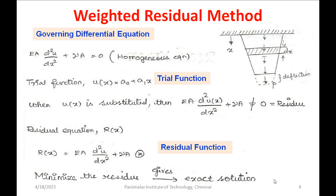When u(x) = a₀ + a₁x, we do not know the values of a₀ and a₁ because it is a trial function. When we substitute this u(x) into the governing differential equation, the equation will not be satisfied — because we are substituting a trial function, not the exact solution.